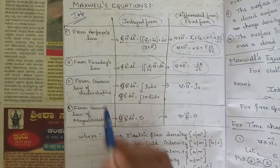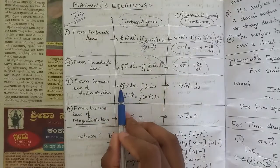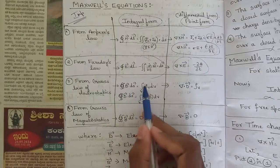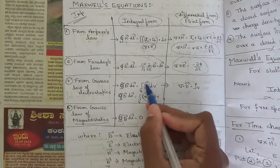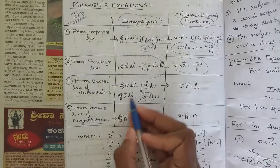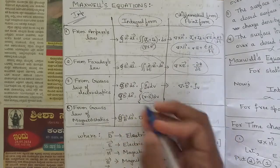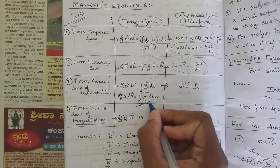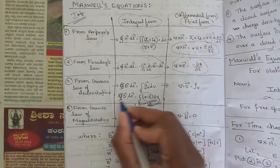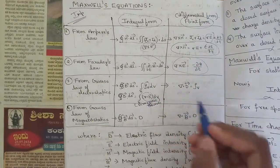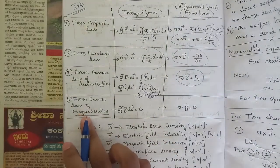From Gauss's law for electrostatics we have obtained: the surface integral of D·dS equals the volume integral of ρv dV, or equivalently del·D = ρv. Replacing ρv with del·D gives the divergence theorem relationship: surface integral of D·dS = volume integral of (del·D) dV. The point form is simply del·D = ρv.